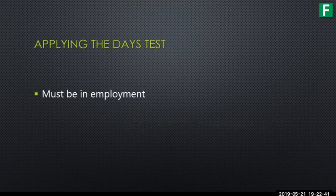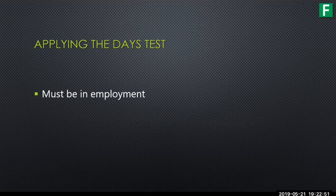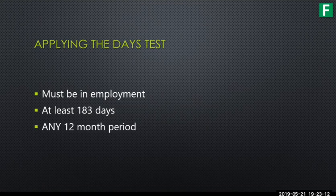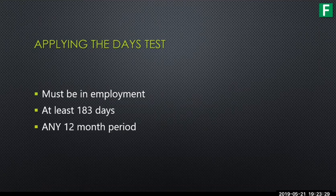The main requirements of the days test: you must be in employment — not necessarily working every single day, but under a valid employment contract. You need to be out of the country for at least 183 days. Importantly, it says 'any 12-month period,' not a tax year or calendar year. So it could start on the 14th of May, for example, and run for any 12-month period. You can also look forward or backward for that 12-month period, and the taxpayer can use whichever works better for them.